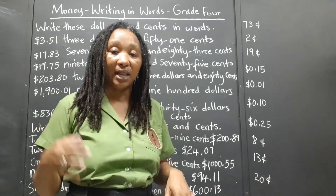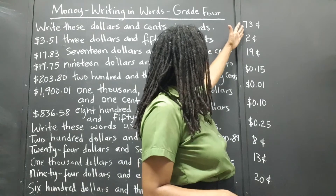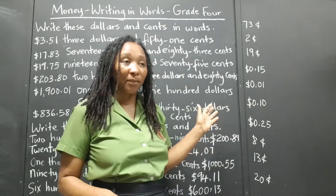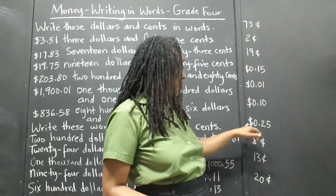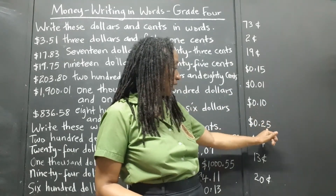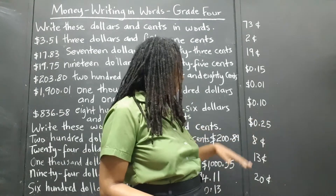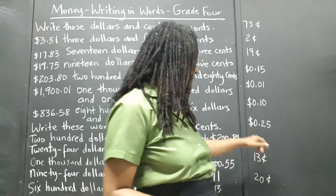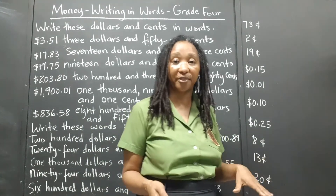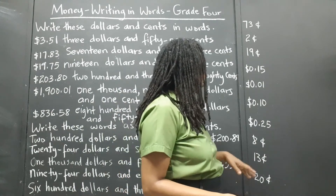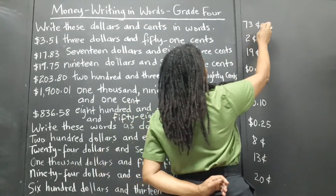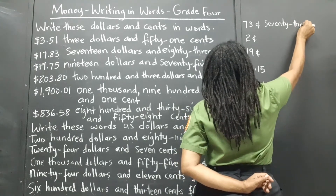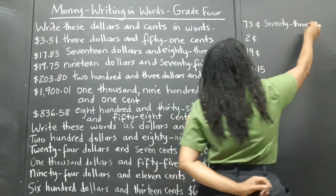Now the last thing we're doing — we're going to write these as words. All of these are actually cents, but there are two ways to write cents: we can write the cents with the dollar sign — $0 and then write the cents — or we can just write the cents using the cent sign. Just remember: if you're using the dollar sign, you don't need to use the cents sign. You can't use both — it's either one or the other. So this is $0.73 — we'll write that as zero dollars and seventy-three cents.